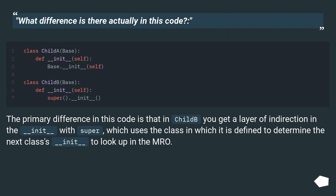What difference is there actually in this code? The primary difference is that in child you get a layer of indirection in `__init__` with super, which uses the class in which it is defined to determine the next class's `__init__` to look up in the MRO.